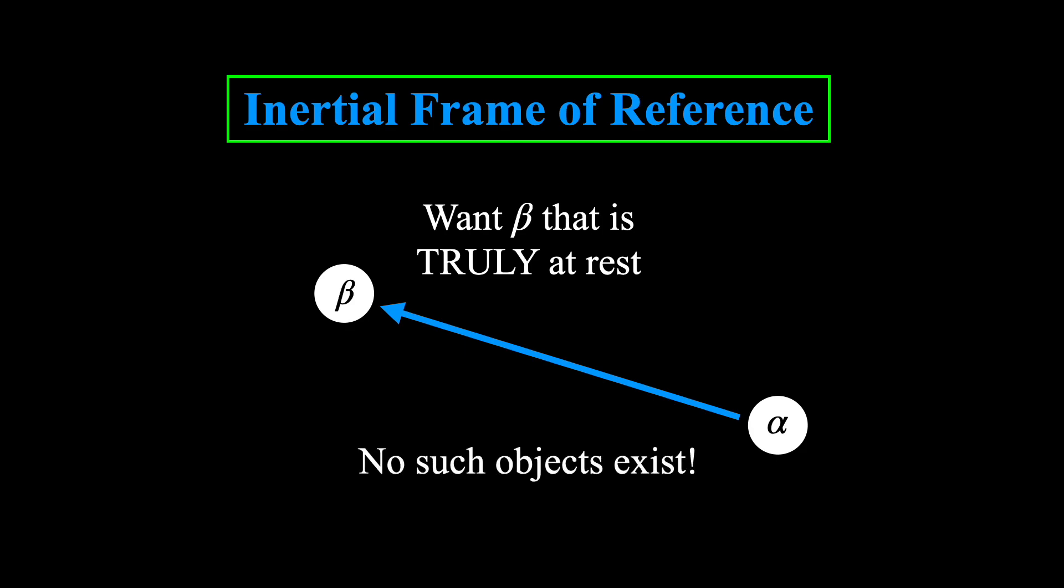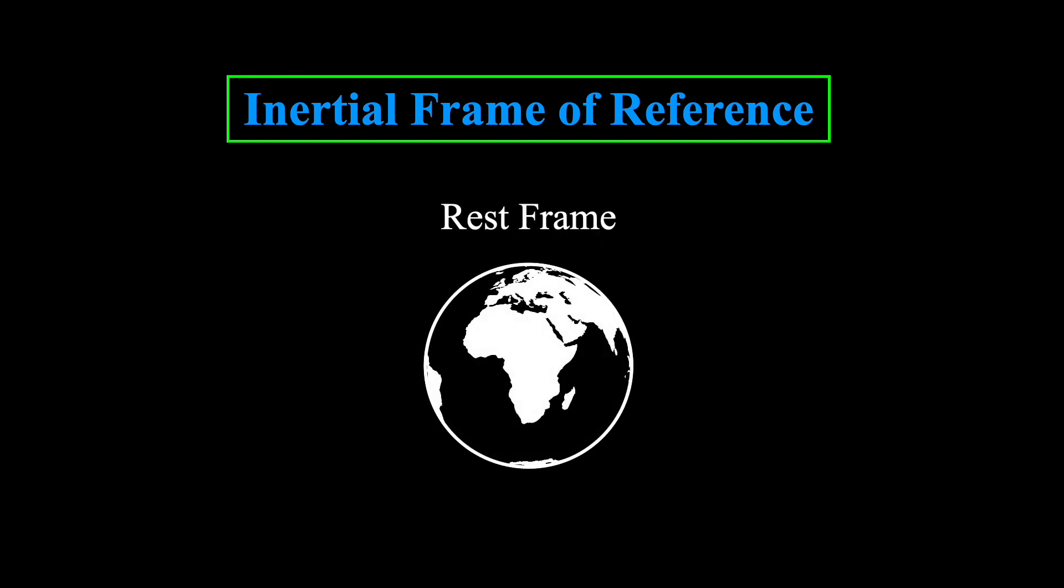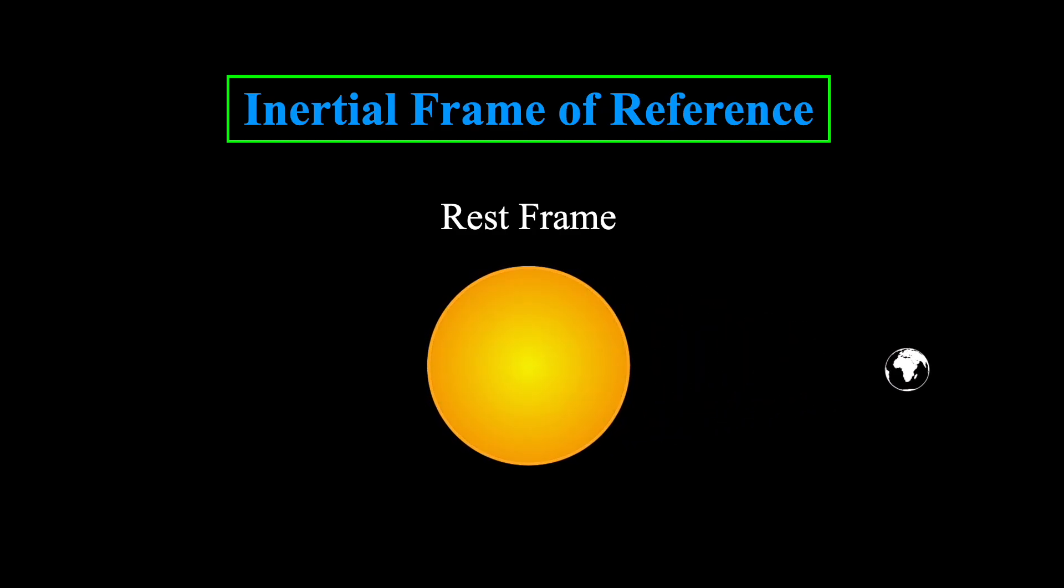But, there are no such objects that exist. For example, in intro physics classes, the reference frame of the Earth is to a good approximation a rest frame. And this works when trying to solve certain problems. But it quickly fails if we want to describe things like the Earth's rotation or movement around the Sun.